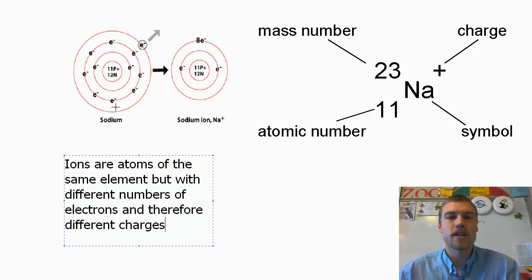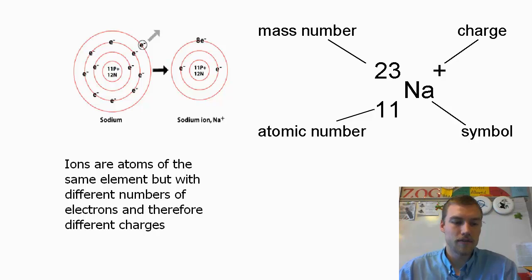And you'll recall back we talked about the fact that protons have a plus 1 charge. Electrons have a minus 1 charge. So by having 11 protons and 11 electrons, overall we're going to have a neutral atom. Now what we can see happening here is that one of these electrons is going to be leaving. So this electron is leaving and going away.